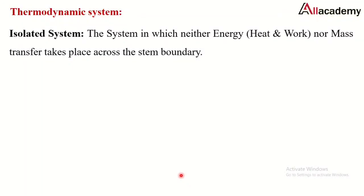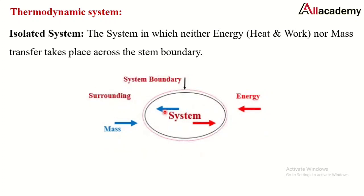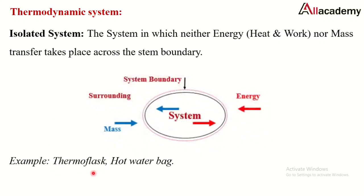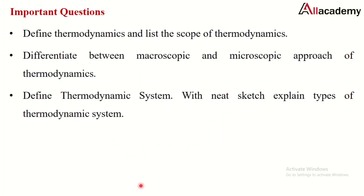An isolated system is one in which neither energy nor mass crosses the system boundary — there is no interaction between the system and its surroundings. As shown in the animation, neither energy nor mass can cross the system boundary. Examples include a thermos flask or a hot water bag, though in practice a 100% isolated system is not possible.